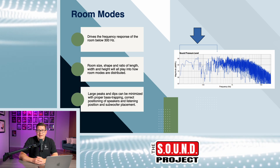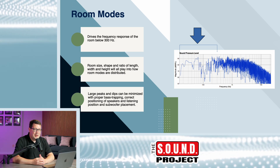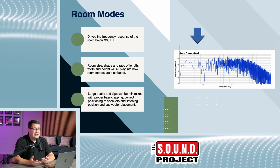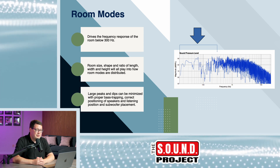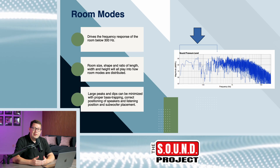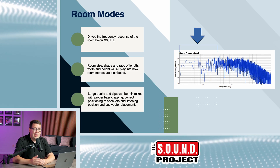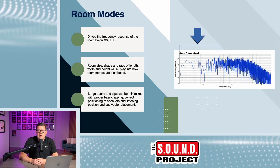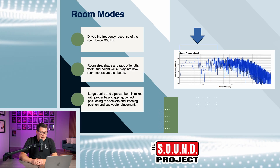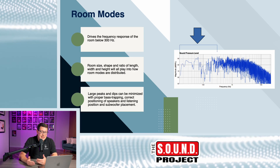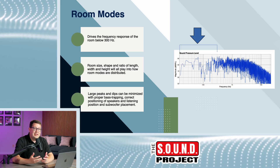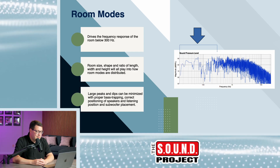Rooms that are 10 foot by 10 foot by 8 foot are going to struggle more than ones with, say, a 9 foot by 11 foot by 8 foot room. Similar in size, but the one with dimensions all divisible by 2 and equal length and width will have a way more erratic frequency response. Large peaks and dips can be minimized with proper acoustical treatment, proper placement of your gear, and your listening position.